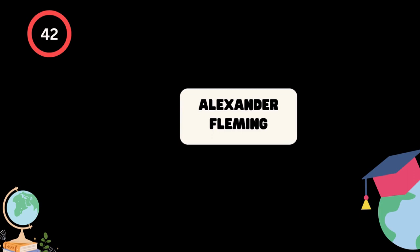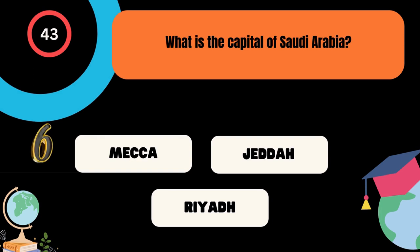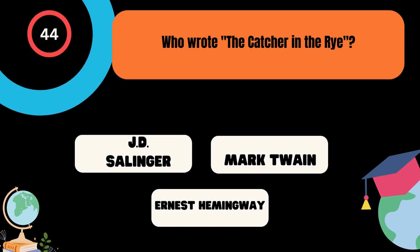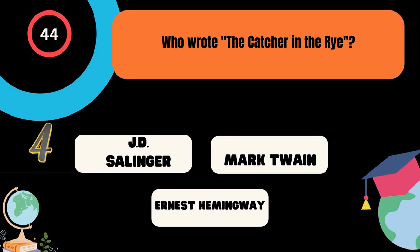What is the capital of Saudi Arabia? A. Mecca, B. Jeddah, C. Riyadh. And the correct answer is Riyadh. Who wrote The Catcher in the Rye? A. J.D. Salinger, B. Mark Twain, C. Ernest Hemingway. And the correct answer is J.D. Salinger.